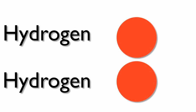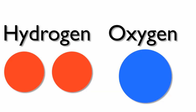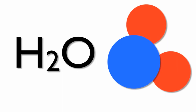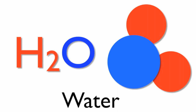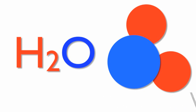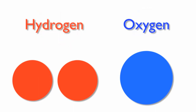Now, let's take two hydrogen atoms. We will combine these two hydrogen atoms with one oxygen atom. This is a chemical compound known as H2O. H2O is better known to us as water. Water contains two hydrogen atoms and one oxygen atom that have been chemically combined.